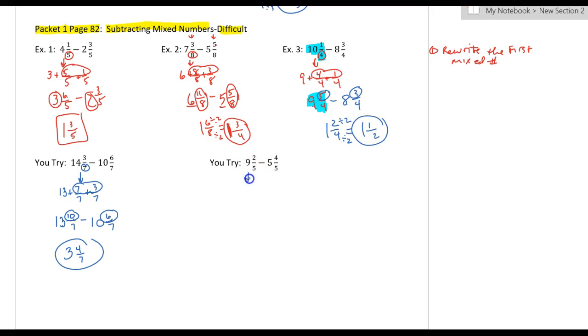The last one. I'm going to rewrite nine as eight, and I'm going to add one, five over five, and the two over five. So this is basically eight plus one plus two-fifths, which gives me eight and seven-fifths minus five and four-fifths.